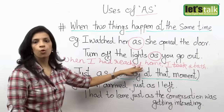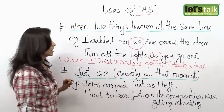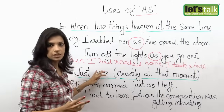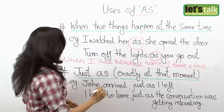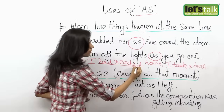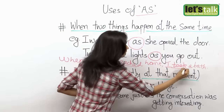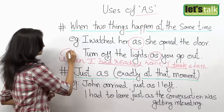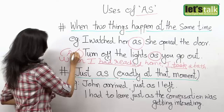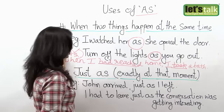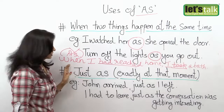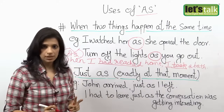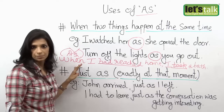For example: 'When I had reached home, I took a bath.' There are two things happening, but one happened after the other — it's not happening at the same time. First I reached home and then I took a bath. So please remember, you cannot say 'as I had reached home' — this is wrong because one action is following the other. You use 'as' only when two things happen at the same time.